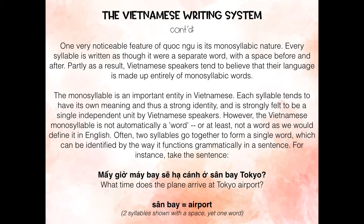However, the Vietnamese monosyllable is not automatically a word — or at least not a word as we would define it in English. Often two syllables go together to form a single word, which can be identified by the way it functions grammatically in a sentence. For instance, take the sentence below: 'Sân bay,' two syllables shown with a space, is only one word — 'airport.'